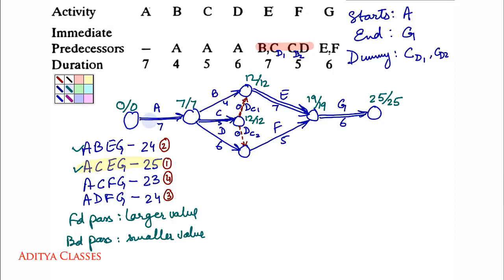Now path A, D, F, G. Forward pass: 0 plus 7 is 7; 7 plus 6 is 13; 13 plus 5 is 18 — but we continue with the existing 19 since it is larger; 19 plus 6 is 25. Backward pass: 25 minus 6 is 19; 19 minus 5 is 14; 14 minus 6 is 8, but we continue with the existing 7. 7 minus 7 gives 0.